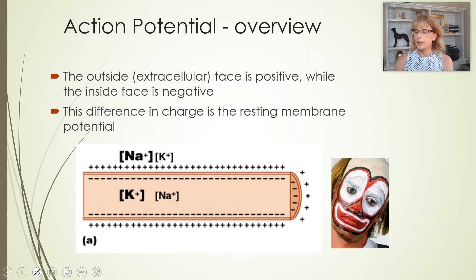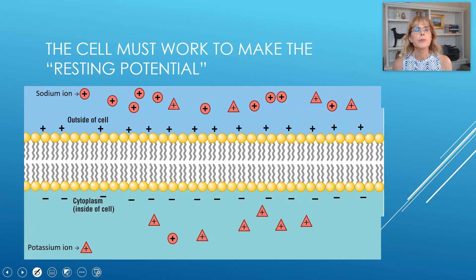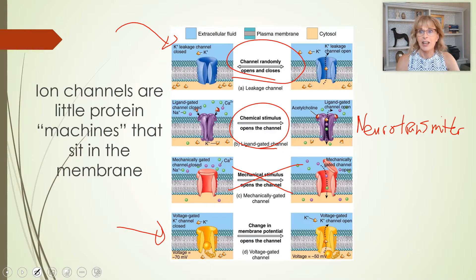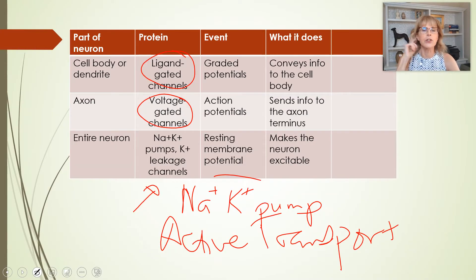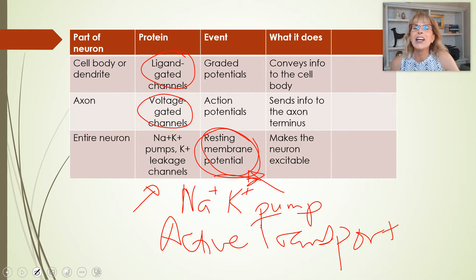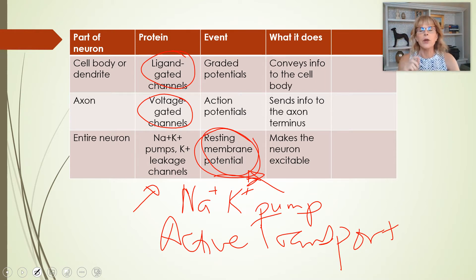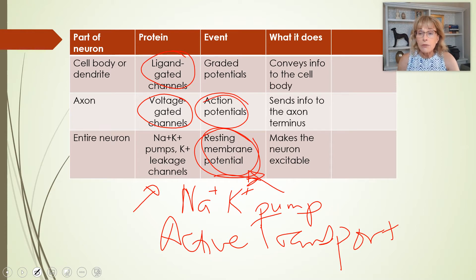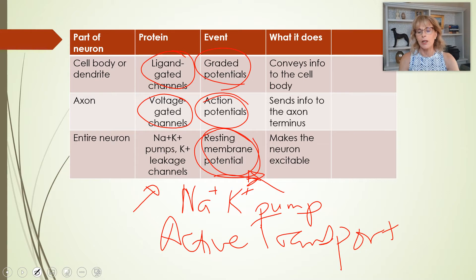We're going to do resting membrane potential first. 'Potential' is an electrical term — it describes the difference across the membrane. We'll start with how the resting membrane potential gets set up, then see what happens when you spring the trap and an action potential occurs, and after that we'll talk about what springs that trap, which will be graded potentials.